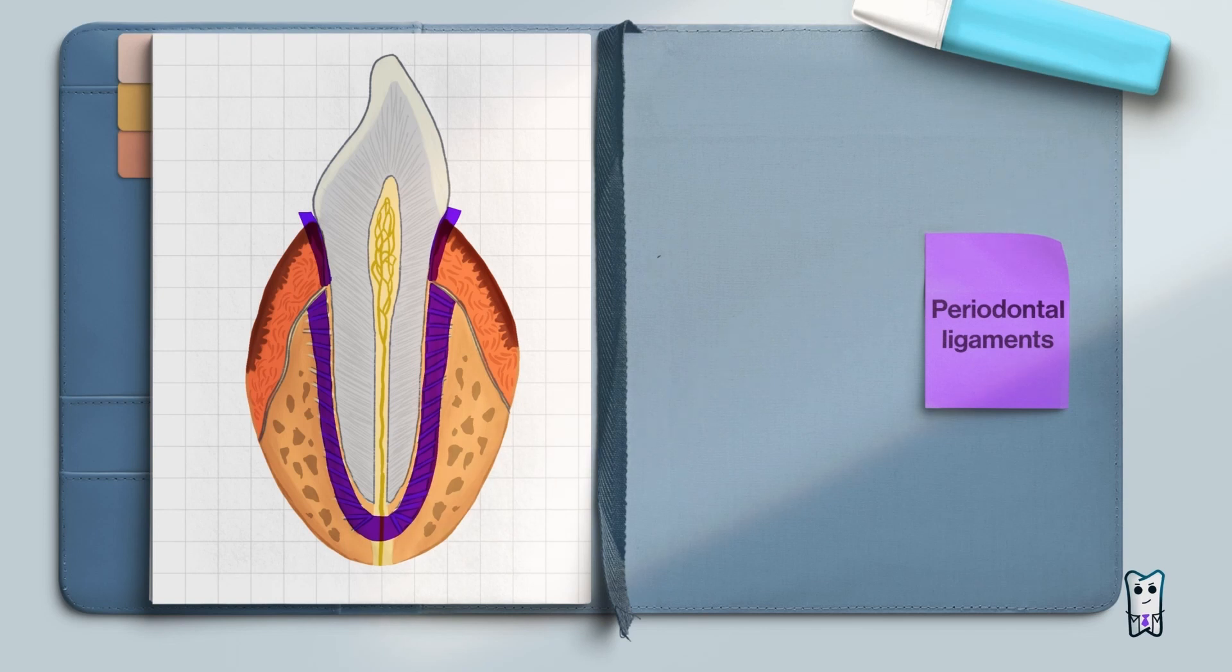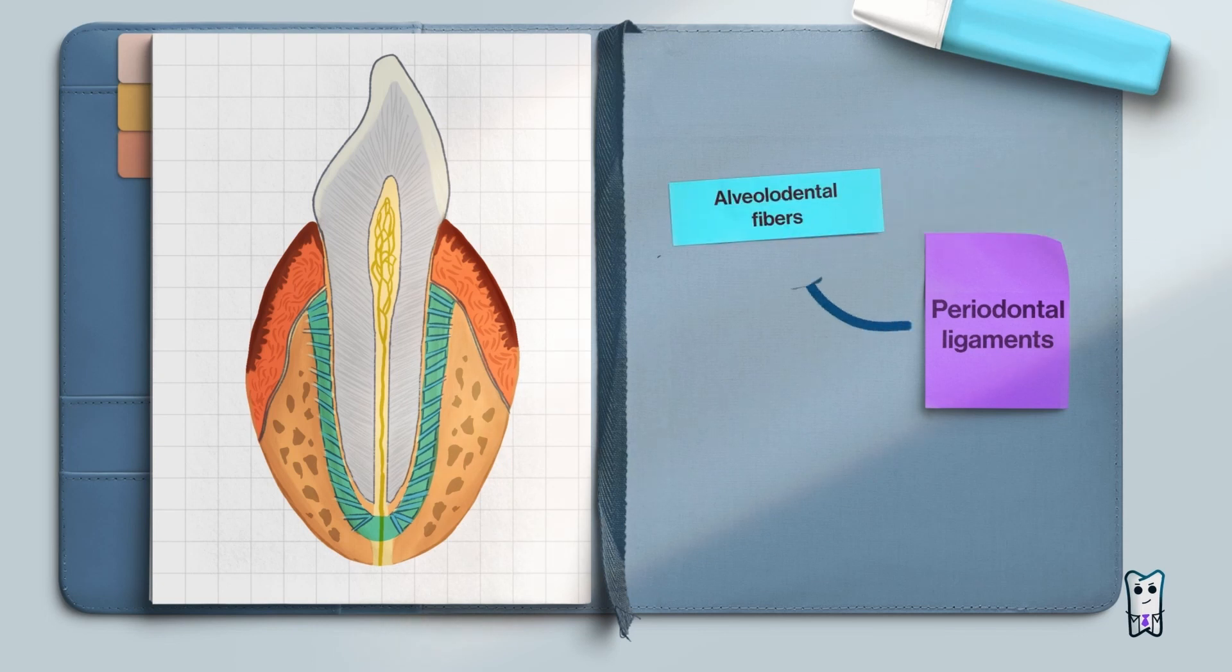The first type comprises the alveolodental fibers, which maintain the position of the tooth relative to the bone. The second type are the gingival dental fibers, which maintain the position of the gingiva relative to the tooth. You have to tear both types of fibers to extract the tooth.